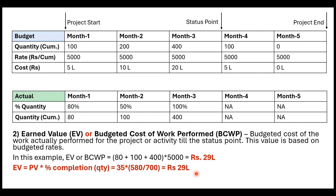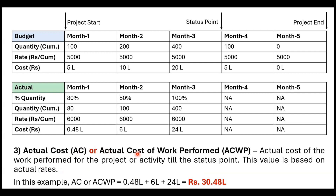Actual Cost (AC), also called Actual Cost of Work Performed (ACWP), uses actual quantities multiplied by actual rates. The budgeted rate was ₹5,000 per cubic meter but the vendor was actually paid ₹6,000. So: 580 cubic meters × ₹6,000 = or alternatively summing monthly actual costs — ₹0.48 lakh + ₹6 lakh + ₹24 lakh — gives an actual cost of ₹30.48 lakh. Actual cost has nothing to do with budgeted cost; you simply add whatever you incurred each month.